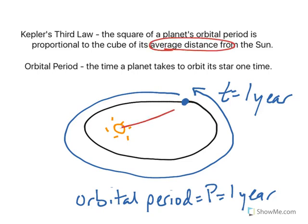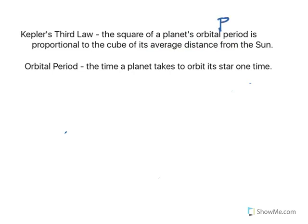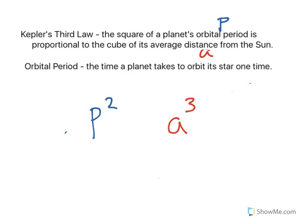Now let's look at average distance. We take the distance that the planet is from the sun as it orbits, find the average, and give it the letter A. So P is the planet's orbital period, and A is the average distance from its star. Kepler's third law says P squared is equal to — or proportional to — A cubed. In its original form, Kepler said P squared equals A cubed, and that's how we'll leave it.